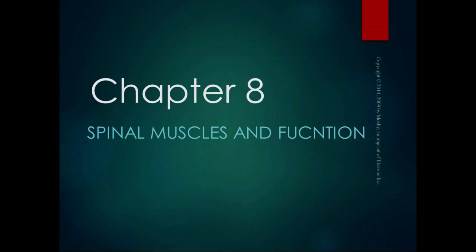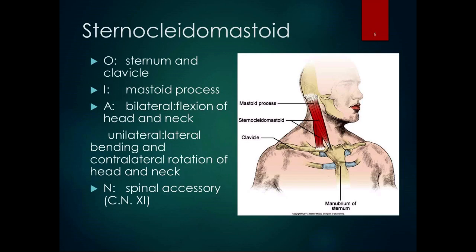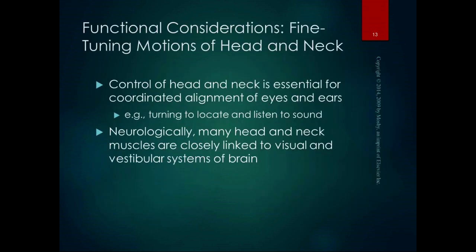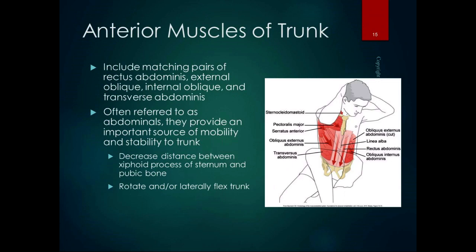Hopefully the last section on muscles — we're going to talk about the trunk muscles. So we talked about the head and neck muscles; now we go into the trunk muscles. The anterior muscles of the trunk, everybody's favorite muscles: the abs. We have matching pairs — one on each side — of rectus abdominis, external oblique, internal oblique, and transverse abdominis. Those four layers of abdominal muscles are often referred to just as a group: abdominals. They provide an important source of mobility and stability to the trunk.